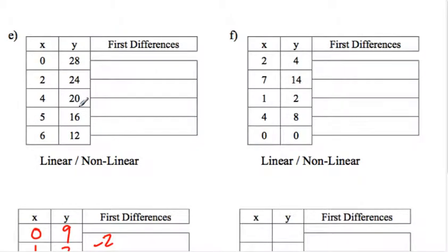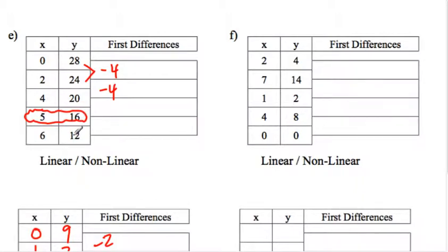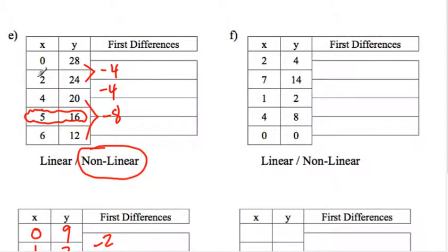Two more. Let's look at E. The X column goes 0, then up 2, up 2, then up 1, up 1 — so the steps are not equal. Considering the values at X = 2, 4, and 6: this subtract that is negative 4; 20 subtract 24 is negative 4; but 12 subtract 20 is negative 8. When X went from 4 to 6 the difference was negative 8, not negative 4. So the first differences are not equal — this is nonlinear. Make sure you've circled nonlinear for E.